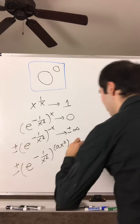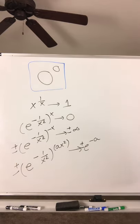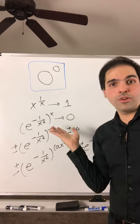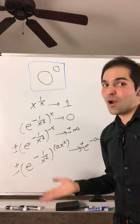So plus minus, we get plus minus any positive number. So what is 0 to the 0? It can be anything you want. Whoa!